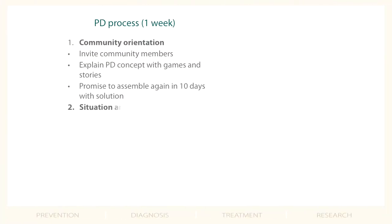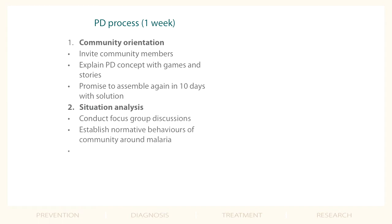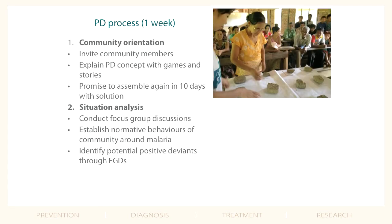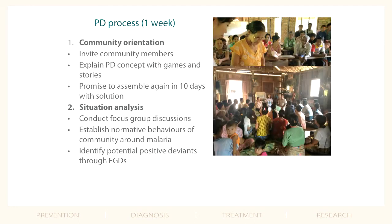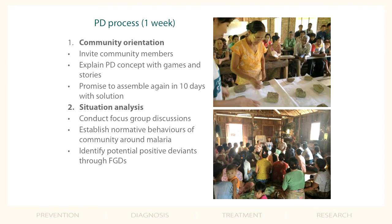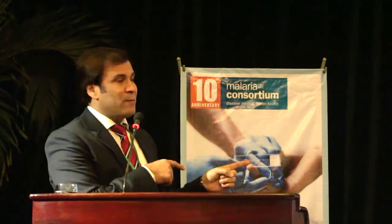The next step is situation analysis — another very important component often missing in other BCC approaches. Usually we do not try to understand who the community are, what they are doing, what the key behaviors are. We think we are experts, we know the community well, so we come up with nice messages and just get their buy-in by pre-testing. Here, we conduct situation analysis through focus group discussions and in-depth interviews to first understand the normative behaviors regarding malaria and dengue, and then find out if there is anyone doing differently — who has the solution, who is healthy despite all the risk factors.